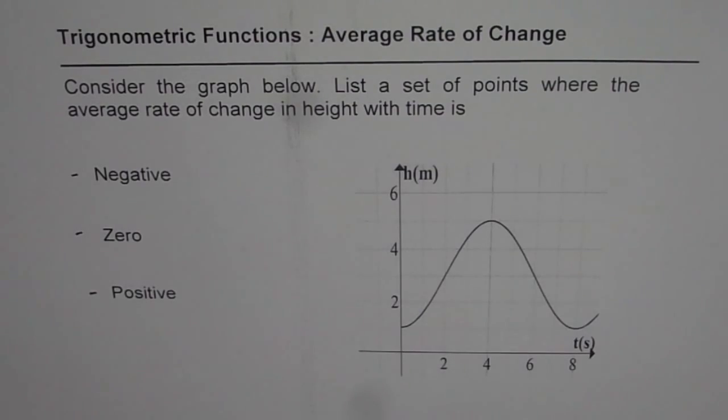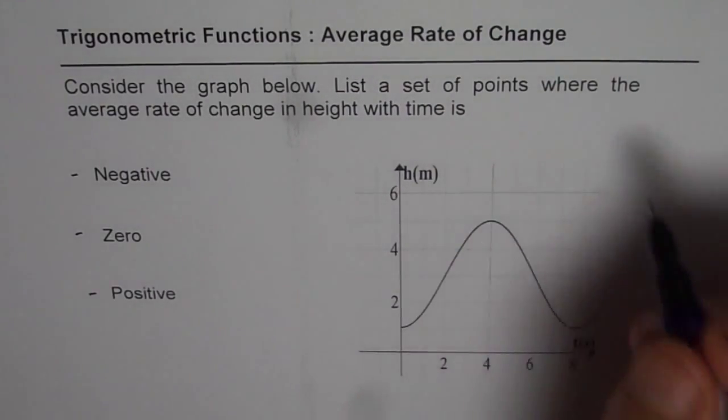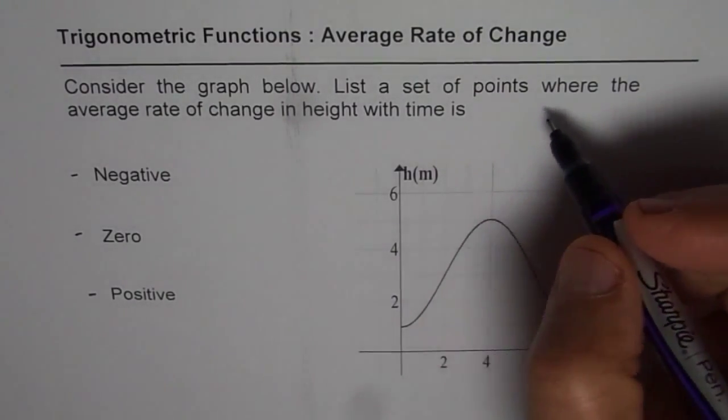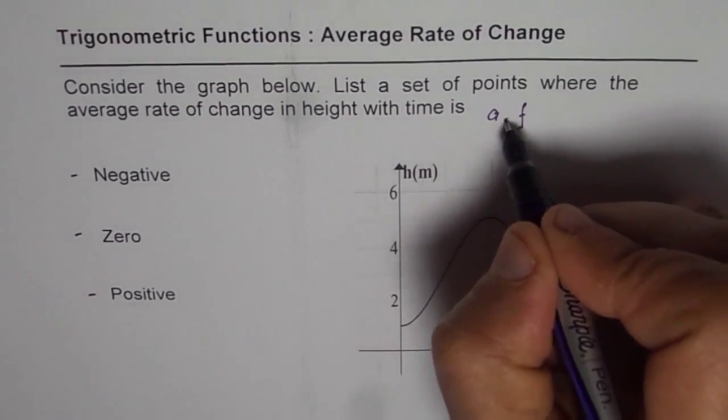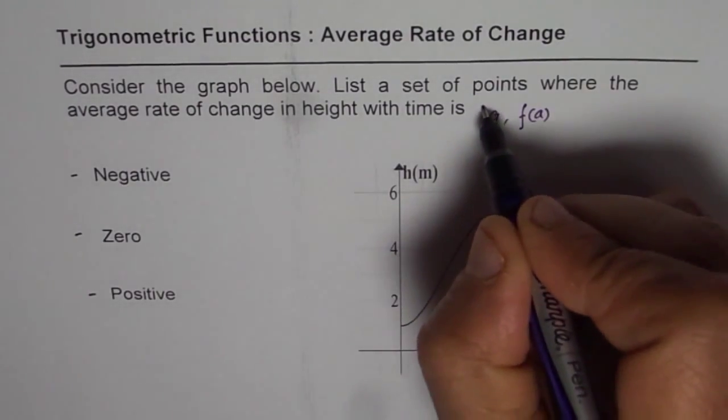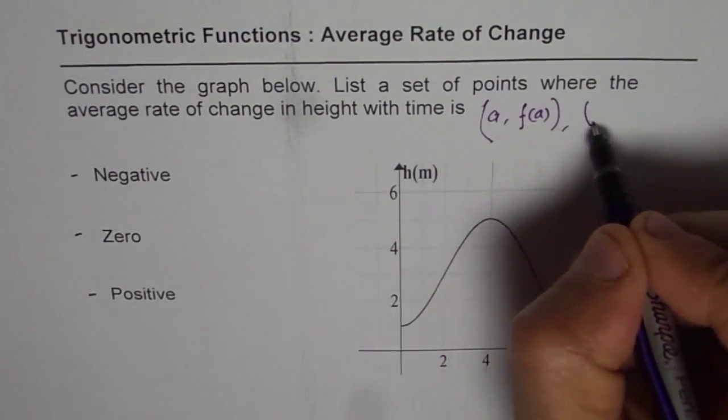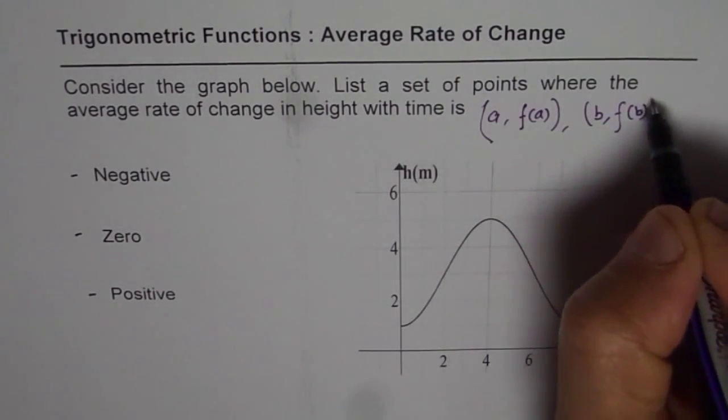When we are considering average rate of change, we are considering two points. So that means there is a point which is A and the value at that point will be F(A). The other point can be B, the value at that point will be F(B).